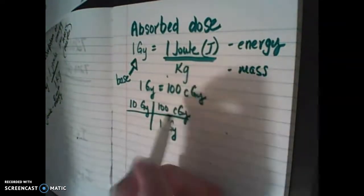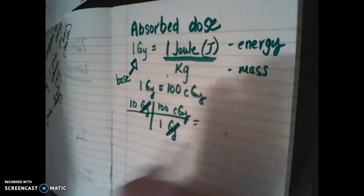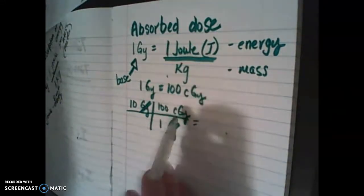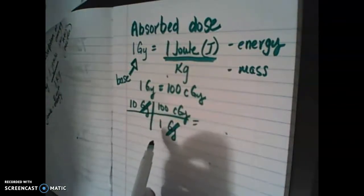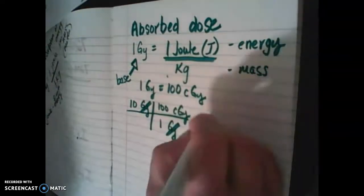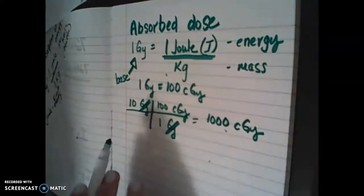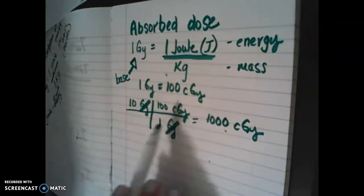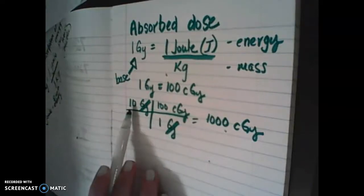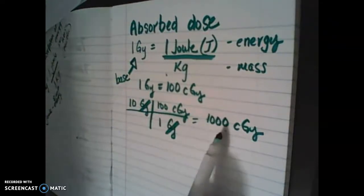Centigray is what we're looking for, so we can cross out gray — those two things cancel out — and we're left with simply centigray. So we just have to do the math: 10 times 100 divided by 1. What's 10 times 100? It's 1,000 centigray. So every time that we're multiplying gray and looking for centigray, we're going to multiply by 100. Whatever this number is, I'm going to multiply that by 100. So I basically have 10 hundreds — that's another way to look at it. 10 times 100 is 1,000.